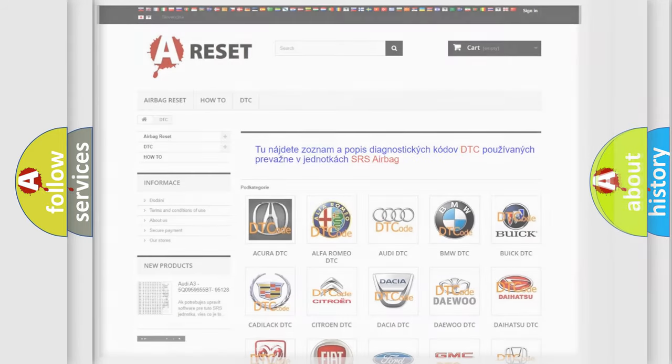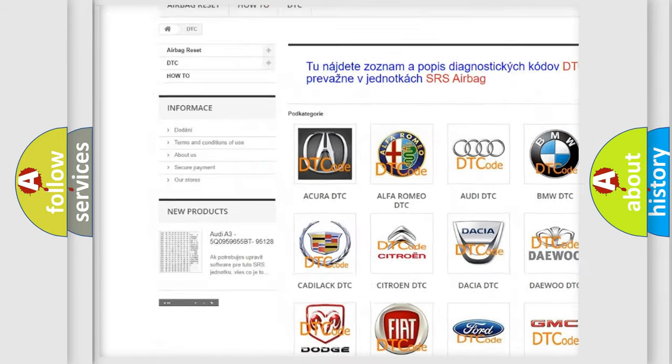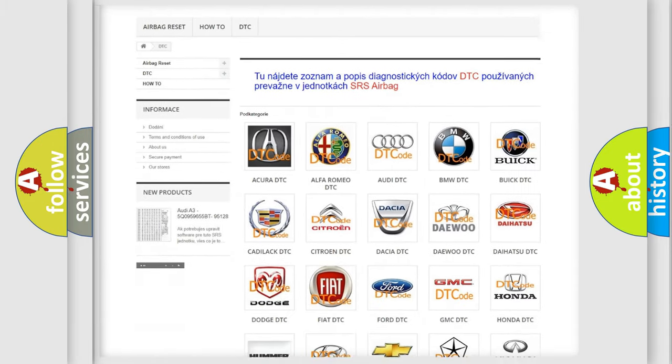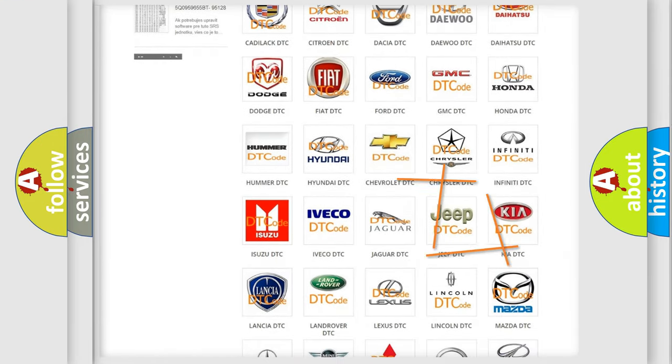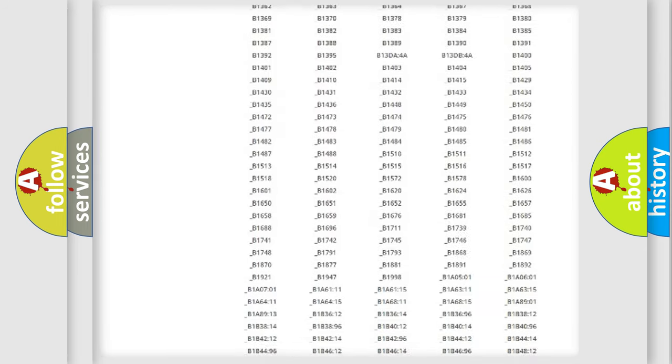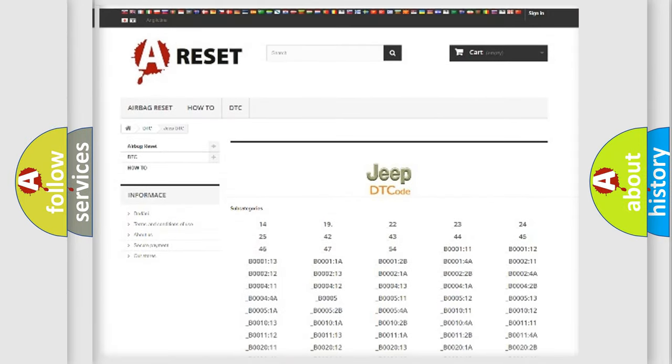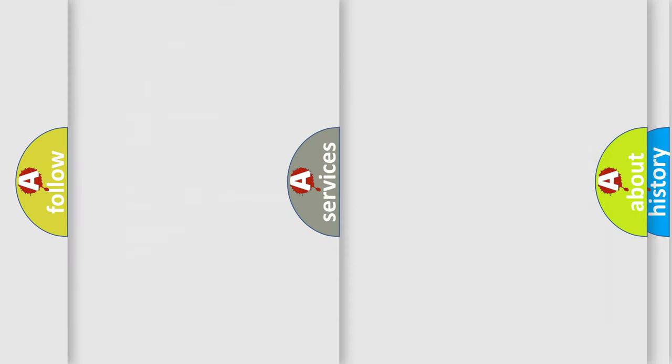Our website airbagreset.sk produces useful videos for you. You do not have to go through the OBD2 protocol anymore to know how to troubleshoot any car breakdown. You will find all the diagnostic codes that can be diagnosed in Jeep vehicles, and also many other useful things.